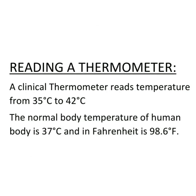Next is reading a thermometer. A clinical thermometer reads temperature from 35 degree Celsius to 42 degree Celsius, as you saw in the diagram. The normal body temperature of the human body is 37 degree Celsius, or 98.6 degree Fahrenheit. Is the body temperature of every person exactly 37 degree Celsius? No. The temperature of every person may not be exactly 37 degree Celsius — it could be slightly higher or slightly lower. The clinical thermometer is designed to measure the temperature of the human body only, which normally doesn't go below 35 degree Celsius or above 42 degree Celsius.